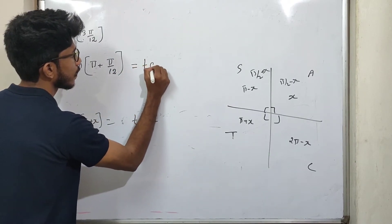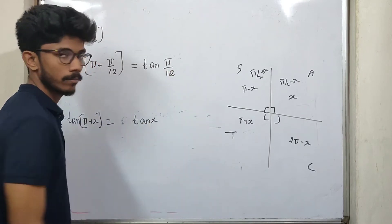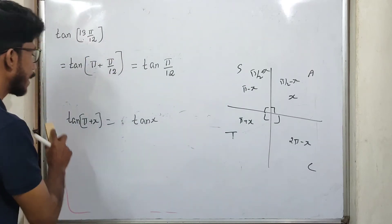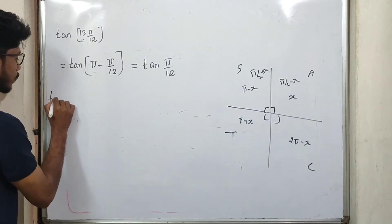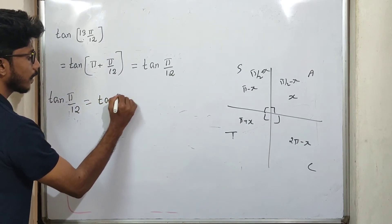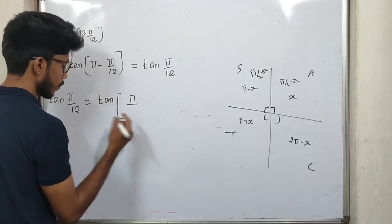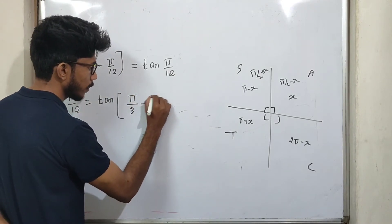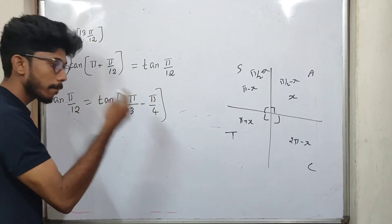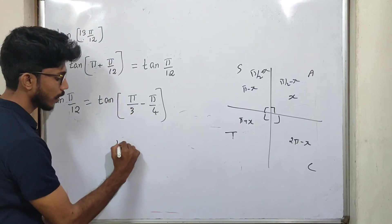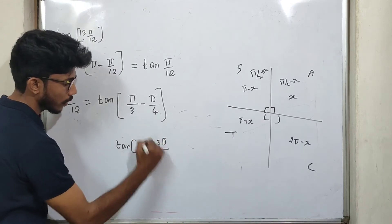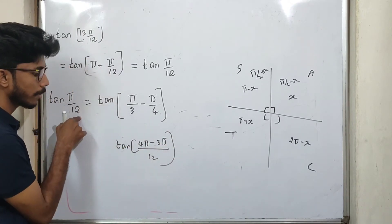Next, we need to find tan(π/12). It is non-standard, so we express it as a difference: π/3 minus π/4. Because 4π minus 3π equals π, divided by 12, gives π/12. So tan(π/12) equals tan(π/3 minus π/4).